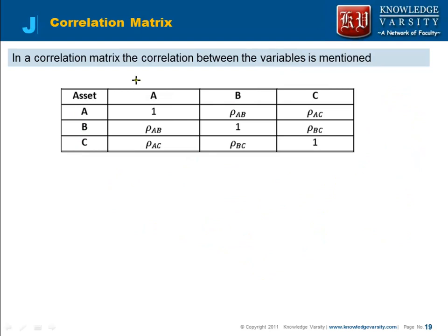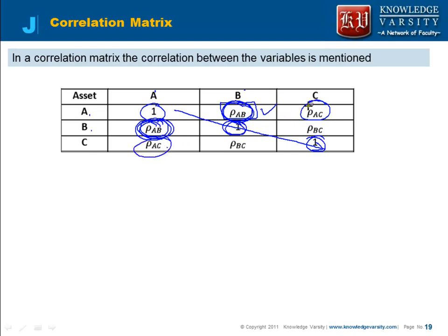So all the diagonal elements will come as 1. Now this value is the correlation between A and B, written as ρ(A,B). This value here is the correlation between B and A. Correlation between B and A is the same as correlation between A and B, so these two values will be the same. Similarly, the correlation between C and B is the same as between B and C, so those values are also the same.